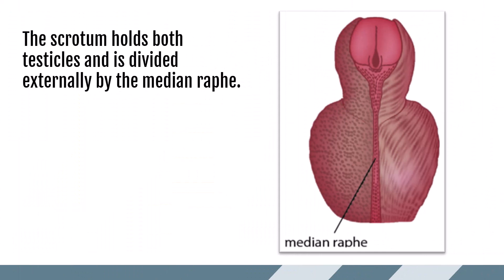The fully mature testicles are found outside of the body in the scrotum. The scrotum holds both testicles and is divided in two halves. Externally it is divided by the median raphe, and internally it is divided by the tunica dartos.